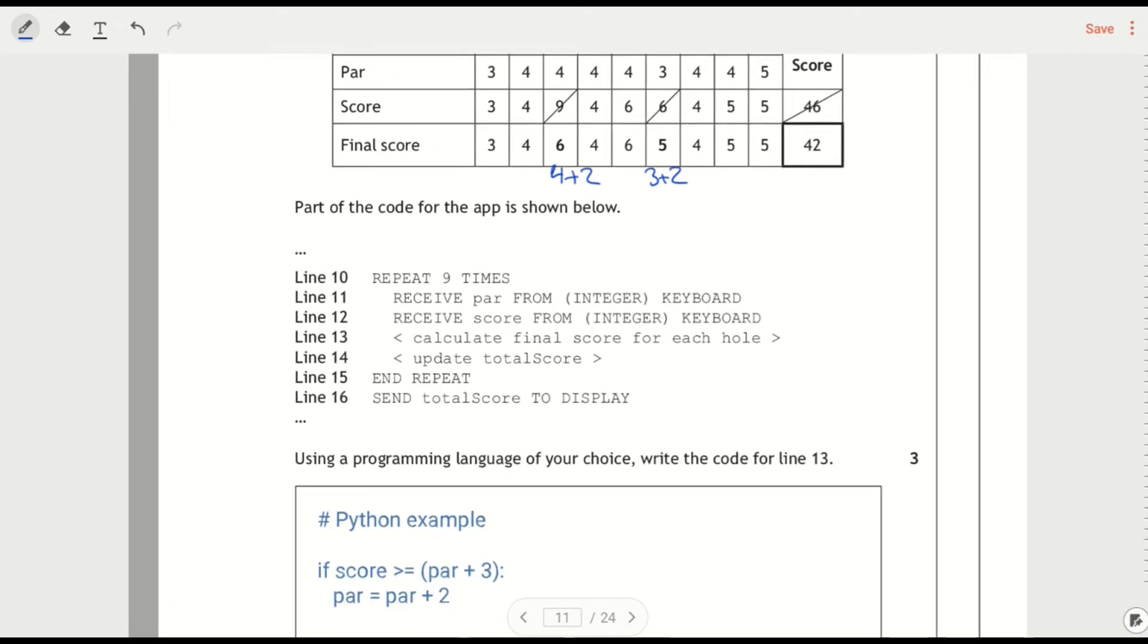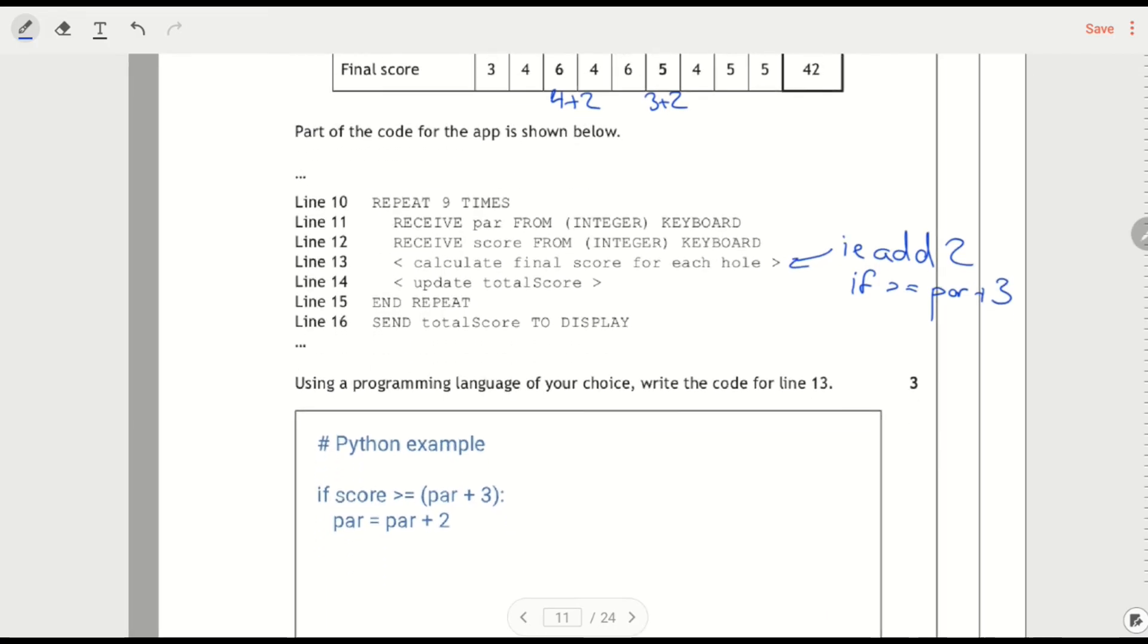Part of the code for the app is shown below. We're looping nine times, getting par from the keyboard and getting score, and then calculate the final score. So this is the bit that's doing the adjustment if it's at least par plus three. Using a programming language, write code for line 13. Now, I think this is a bit confusing because it's not 14 as well. Line 14 just says update total score, but we're not asked to do that one. We're just asked to do 13.